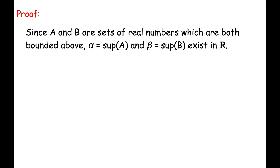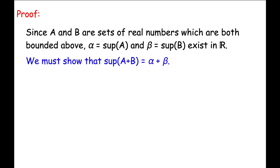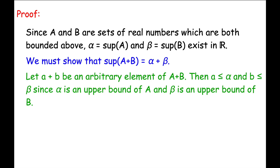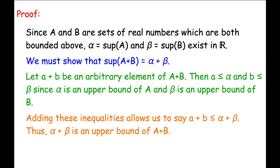Now let's work our way through the proof. Since capital A and capital B are sets of real numbers which are both bounded above, we know that the sup of A and sup of B exist in R. Call the sup of A alpha and the sup of B beta. Our goal is to show that the sup of A plus B equals alpha plus beta — in other words, we must show that alpha plus beta is the least upper bound of the set capital A plus capital B. Let's start by showing that alpha plus beta is an upper bound of capital A plus capital B. Let little a plus little b be an arbitrary element of capital A plus capital B, with little a in capital A and little b in capital B. Then little a is less than or equal to alpha and little b is less than or equal to beta, since alpha is an upper bound of capital A and beta is an upper bound of capital B. Adding these two inequalities allows us to say that little a plus little b is less than or equal to alpha plus beta. In other words, alpha plus beta is an upper bound of capital A plus capital B.